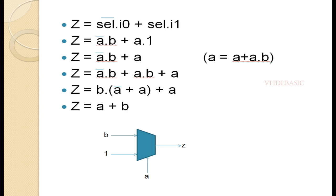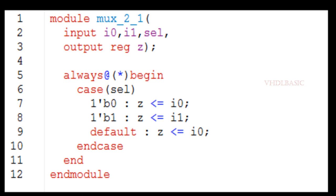This is how we simplify the 2-to-1 MUX expression to determine which pins to connect where. Now I am going to implement this in Verilog and simulate it, explaining with the waveform. This is the 2-to-1 MUX Verilog code where I0, I1, and select are the inputs and Z is the output. Whenever select is 0, I0 is assigned to Z; whenever select is 1, I1 is assigned to Z.